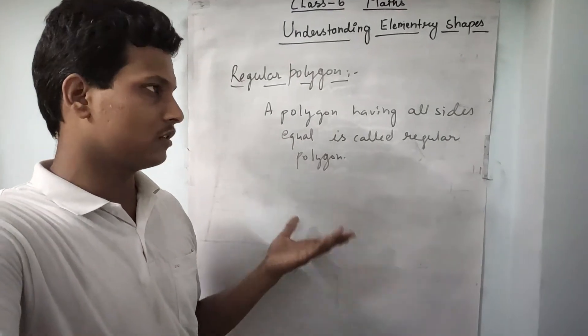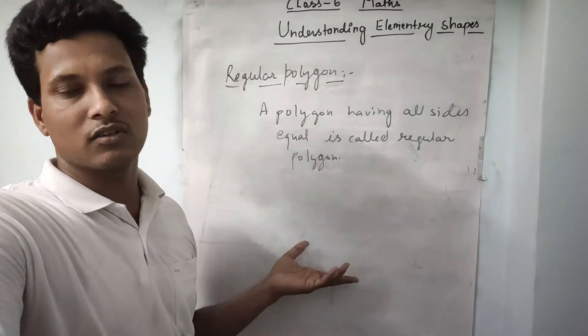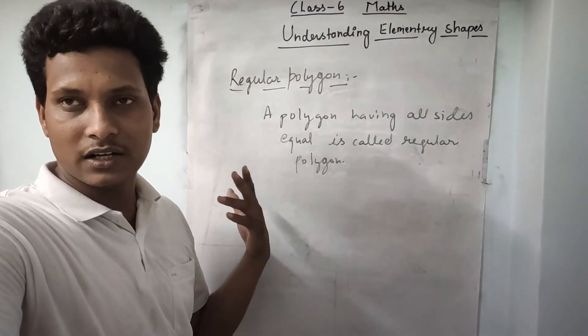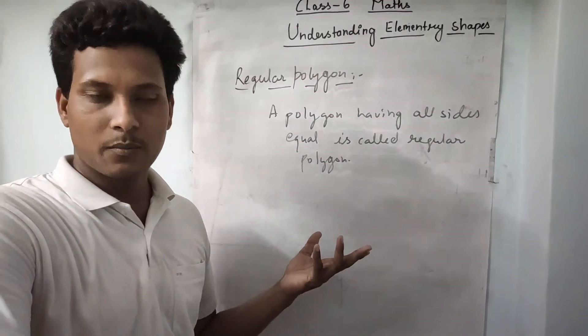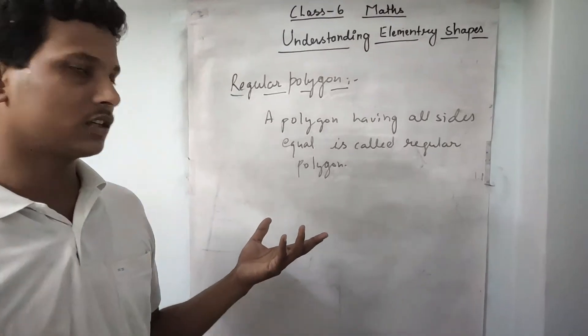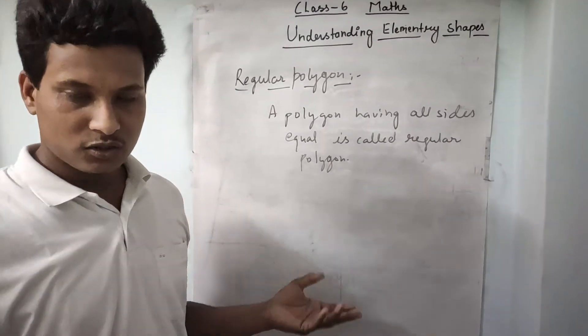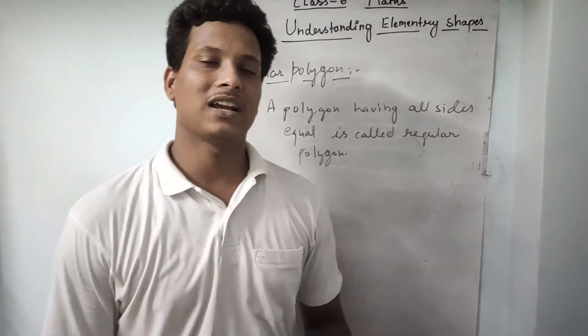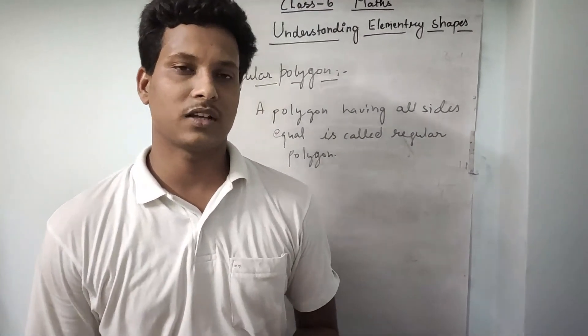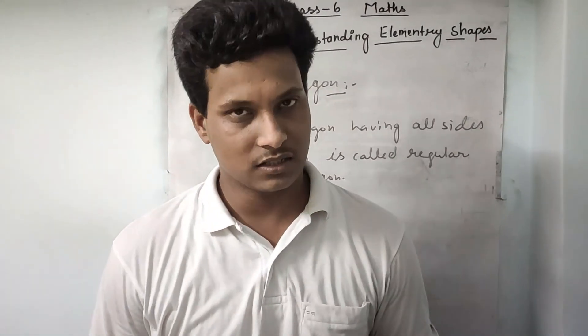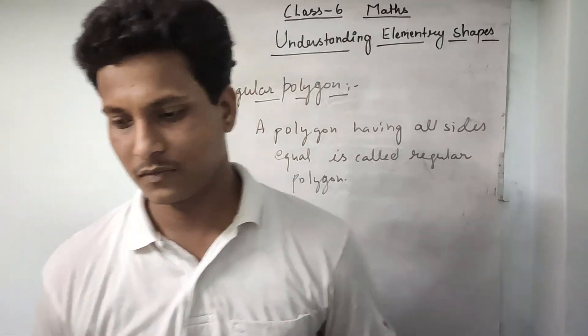So we can say regular triangle, regular quadrilateral, regular pentagon, regular octagon, and so on. That is it for this chapter. We will continue in the next chapter. Thank you.